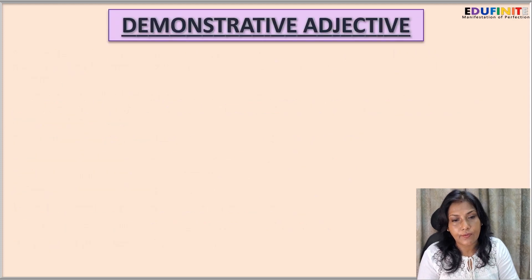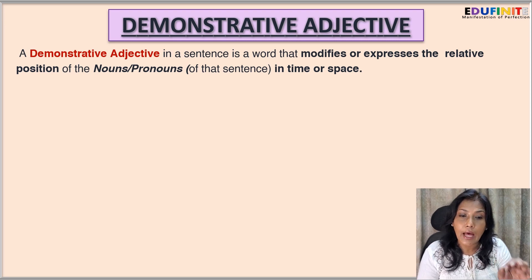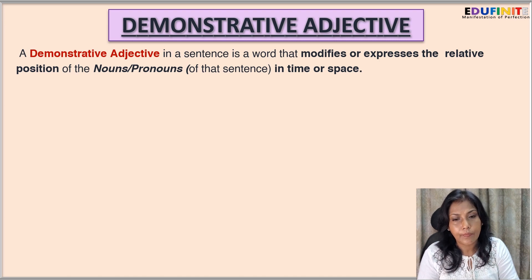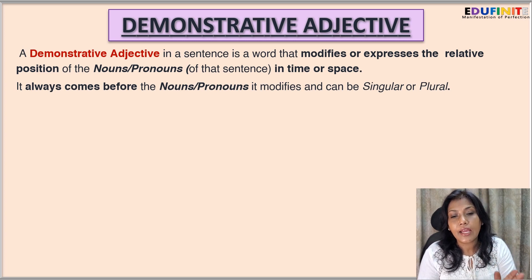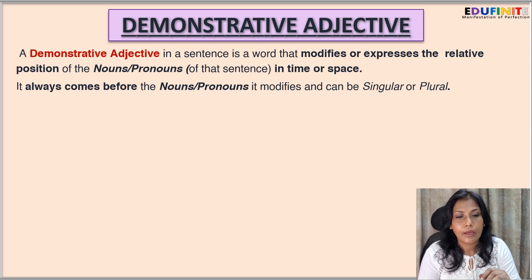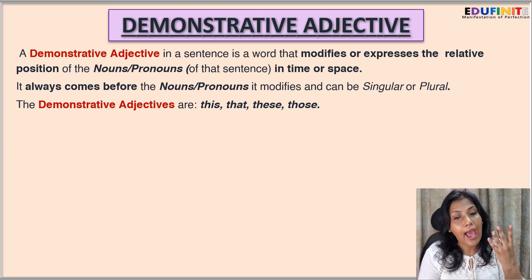Now the next type is demonstrative adjective. A demonstrative adjective in a sentence is a word that modifies or expresses the relative position of the noun or pronoun in time or space. It always comes before the noun it modifies and can be singular or plural. The demonstrative adjectives are: this, that, these, and those.